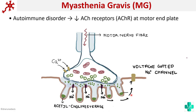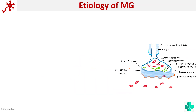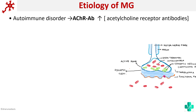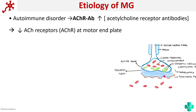That is how the depolarization of the muscle membrane takes place. In myasthenia gravis, there are antibodies formed against these acetylcholine receptors — that is the main cause. It is an autoimmune disorder in which there are antibodies against acetylcholine receptors, and because of that, there is decreased acetylcholine receptors at the motor end plate.